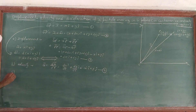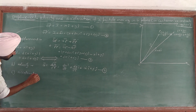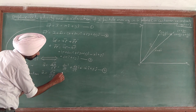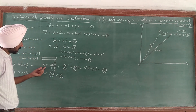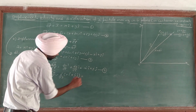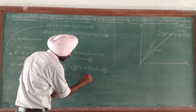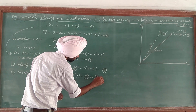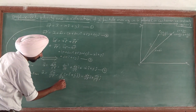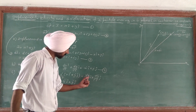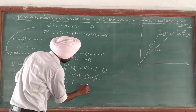Finally, we are interested in finding the acceleration. Acceleration is defined as the rate of change of velocity, so a = dv/dt. From equation number 4, we have v = ẋ·i-cap + ẏ·j-cap, so this gives us (dẋ/dt)·i-cap + (dẏ/dt)·j-cap. So the acceleration of the particle is a = ẍ·i-cap + ÿ·j-cap, where ẍ is the double derivative of x with respect to t. This is equation number 5.